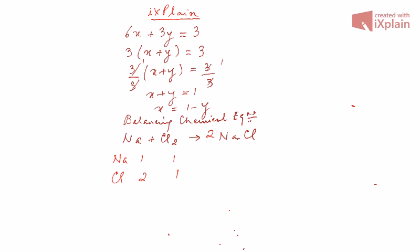Alright, so now we have, after the reaction, we have 2 sodiums and we have 2 chlorines. So 2 and 2 chlorines, those are balanced. But now the sodium is not balanced. So what we have to do is put a 2 before it.